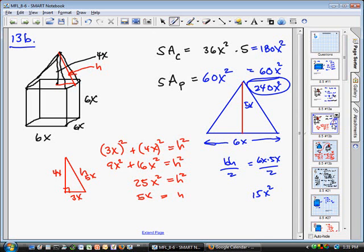Yeah, face of the cube. The cube is 6x on each side, and the pyramid has a height of 4x. Can you see where I'm pointing up there? For 4x? Now, do you notice how that comes from the tip of the pyramid to the center of the top of the cube?